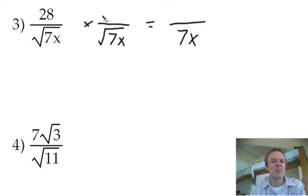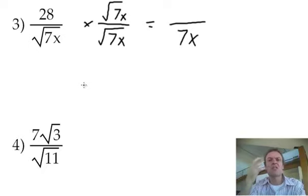Now, unfortunately, because I've done it to the bottom, I have to do it to the top, remember? Now, remember what this is, is you can't do 28 times a 7, it's inside a square root.